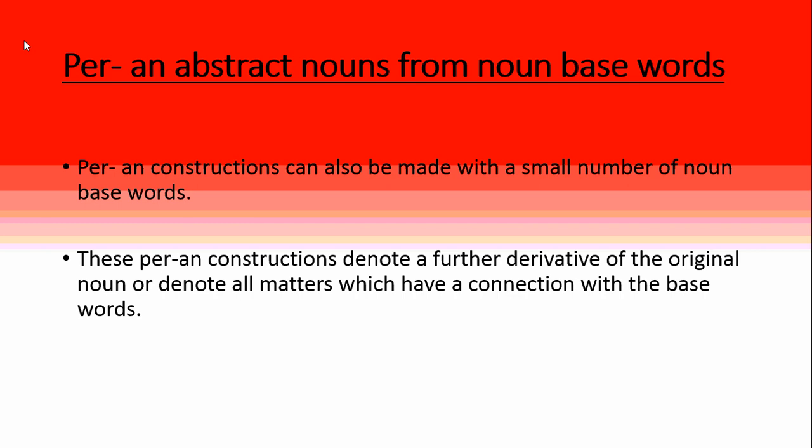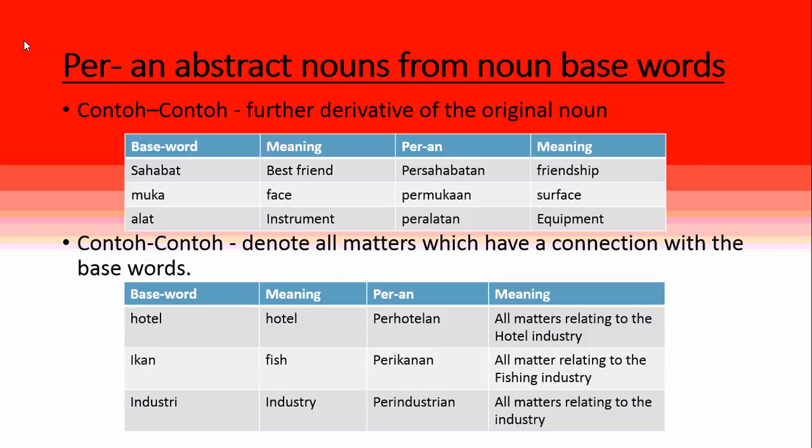Per-an abstract nouns can also be made from a small number of noun base words. These per-an constructions are either a further derivative of the original noun — usually a more complicated or advanced meaning — or they denote all matters which have a connection with the base word. For example, sahabat meaning 'best friend' becomes persahabatan meaning 'friendship,' and muka meaning 'face' becomes permukaan meaning 'surface.'